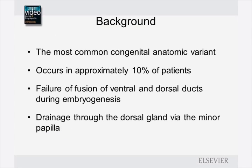Pancreas divisum is the most common congenital anatomic variant of the pancreas. It occurs in approximately 10% of patients. It is caused by failure of fusion of the ventral and dorsal ducts during embryogenesis. As a result, drainage occurs through the dorsal gland via the minor papilla.